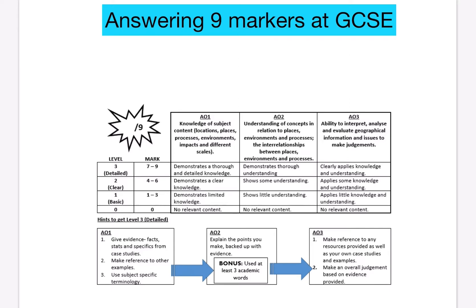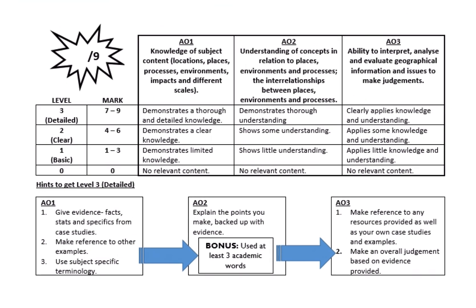A nine mark question can feel a bit daunting, but when you break them down they're quite simple and they always follow a similar structure in terms of marking. The questions are always marked on three assessment objectives: AO1, AO2, and AO3. The more familiar you become with these three terms, the easier you'll find the writing.